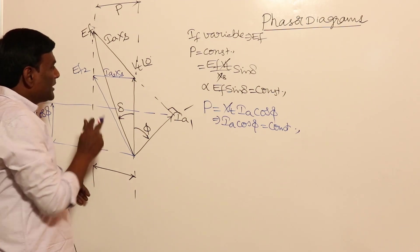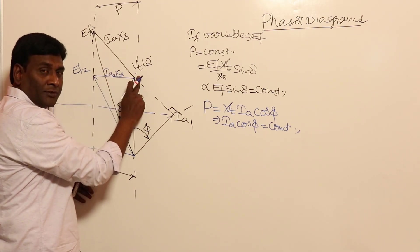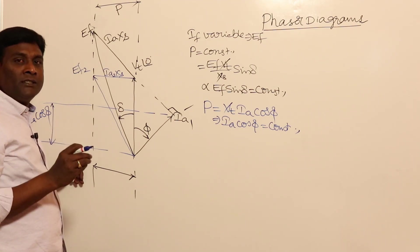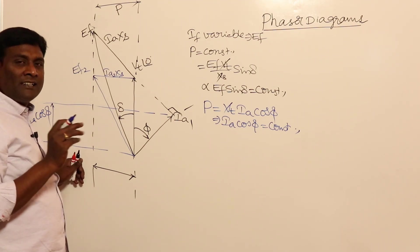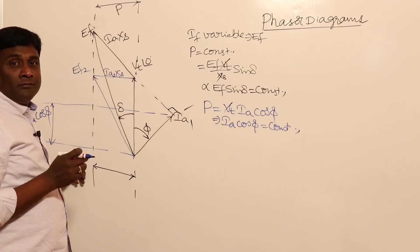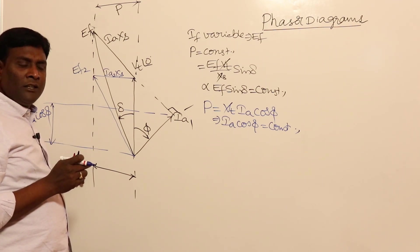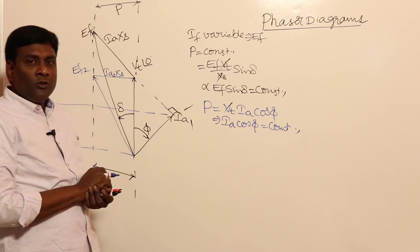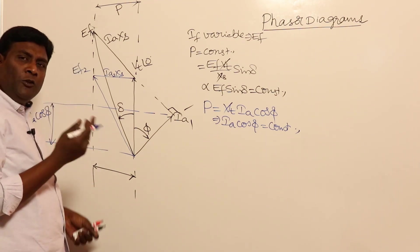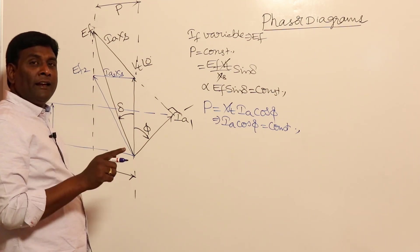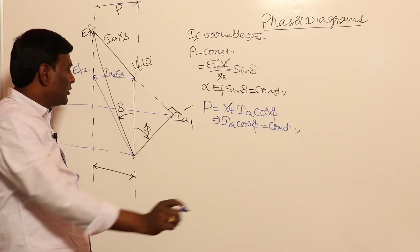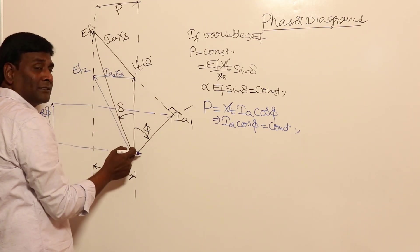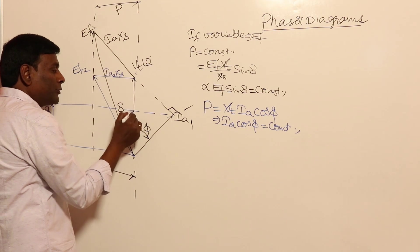Some viewers may find this initial part difficult due to prior concepts. The advantage of this recorded session is that you can rewatch multiple times to build proficiency. If Ia2 excess is in this direction, then Ia2 should be 90 degrees to Ia2 excess.